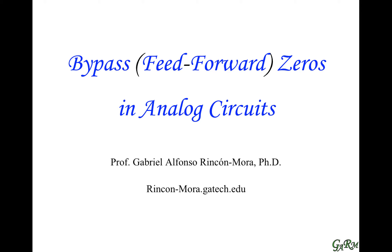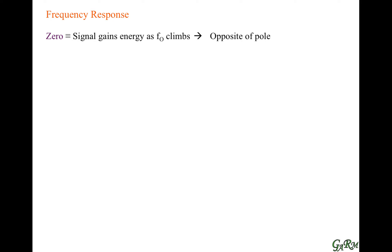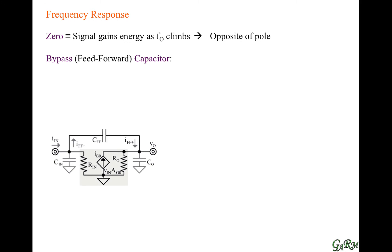This video is on bypass zeros in analog circuits. A zero refers to a signal that increases with frequency, or gains energy with frequency. In other words, it's the opposite of a pole.